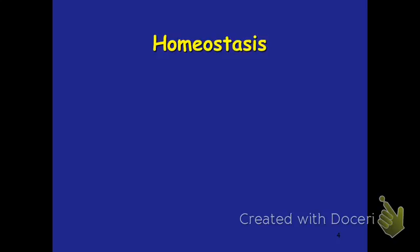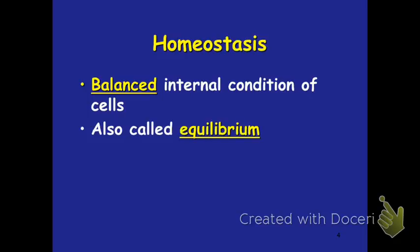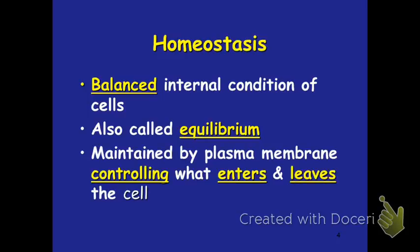Homeostasis means the balanced internal condition of cells — we have to maintain internal balance. This is one of the characteristics of life. We can also call this balanced equilibrium, meaning maintaining equilibrium with our environment. Our cell membrane has the job of controlling what enters and leaves the cell, and it's able to determine who gets in and who gets out based on different properties. This job is very important in maintaining homeostasis for the cell itself.